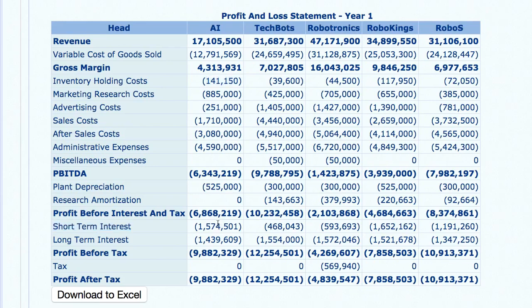Companies with high inventory holding costs have also paid high interest. This means companies with low inventory holdings had more certainty in cash inflows and didn't need to take emergency loans. Companies that used inventory didn't have cash and had to take emergency loans. For example, AI has already paid 15 lakhs of short-term interest — and that's just the interest, not the loan itself.